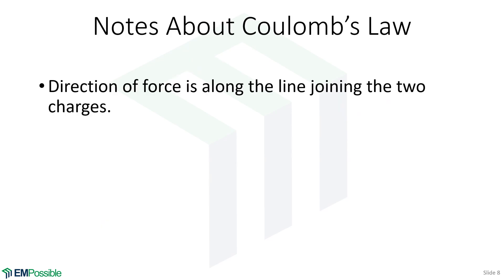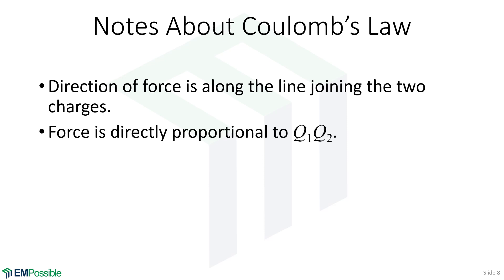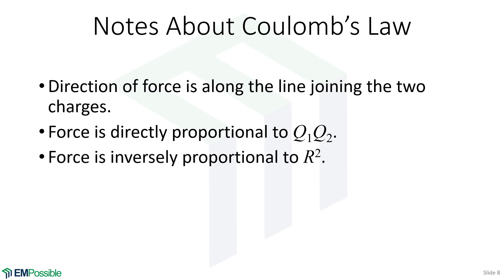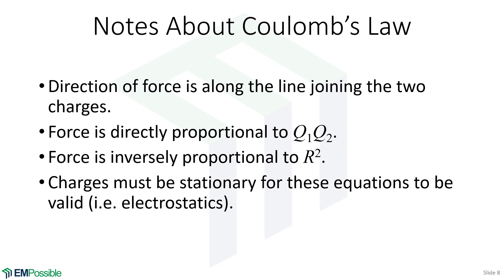Let's end this with some notes about Coulomb's law. First, the direction of the force is along the line joining the two charges. So if we take the two positions and subtract them, we can calculate a vector in that direction. Divide by that magnitude and we have a unit vector in that direction to use in our calculations. Second observation: the force is directly proportional to Q1 times Q2, so the magnitudes of both charges contribute to force equally. Force is inversely proportional to R squared, so as we move the charges apart, the force decreases as one over R squared.